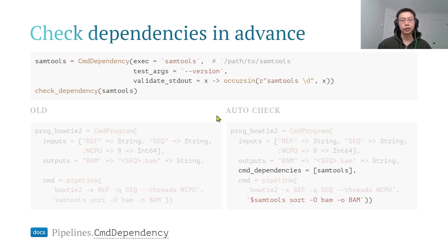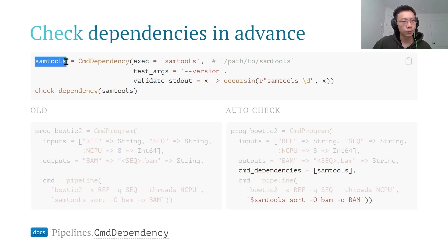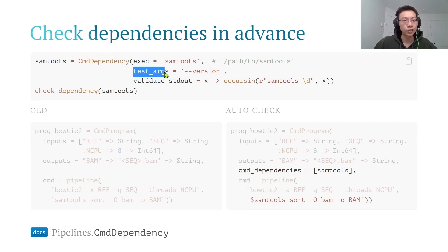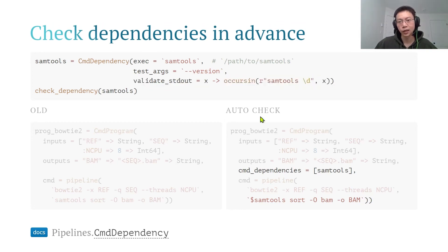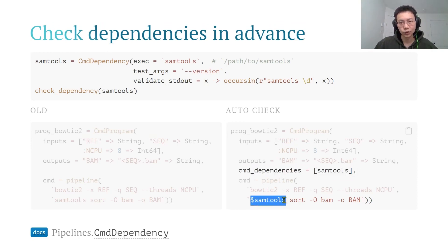Besides that, we can check dependencies in advance. In the script, we use tools like bwa and samtools. We can define those tools as command dependencies. The exec field is the binary path to the executable, then you provide test arguments and version, and validate the standard output or standard error using a function you define. The pipeline can auto-check these dependencies before the program runs.